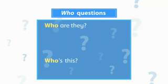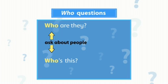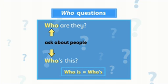We use the question word 'who' to ask about people. We use 'is' to ask about one person. We use 'are' to ask about more than one person. We often use 'who is' in formal written English and 'who's' in spoken English.